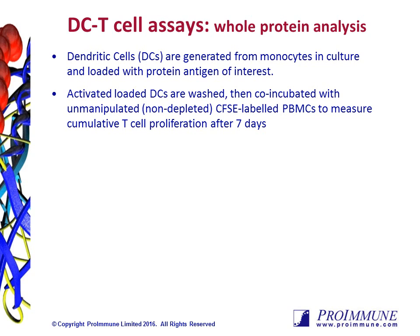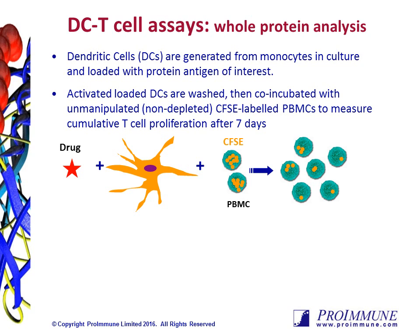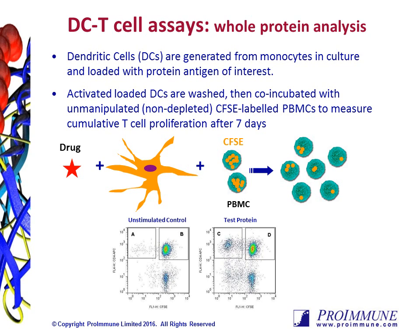The workflow for the DC T-cell assay is described here. Monocyte-derived dendritic cells are generated from each healthy donor and then loaded with the drug candidate. The activated loaded DCs are then washed and co-incubated with autologous CFSE-labeled PBMCs. CFSE is an intracellular staining dye that gets incorporated evenly into daughter cells every time the cell divides. After the seven-day co-culture, CFSE levels are measured on CD4-positive T-cells by flow cytometry. An added advantage with this method is that T-cell populations can be further characterized by incorporating additional phenotypic markers, which isn't possible with other proliferation assays such as tritiated thymidine incorporation.